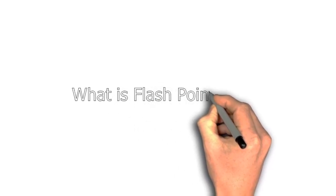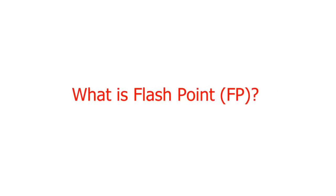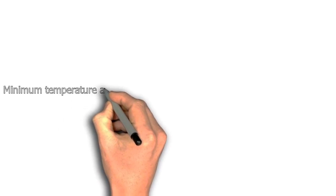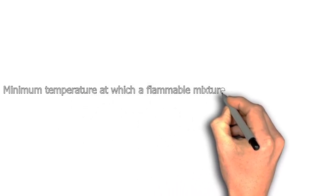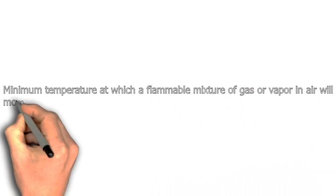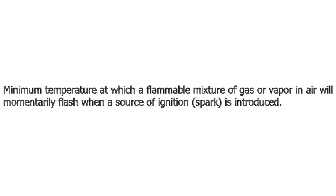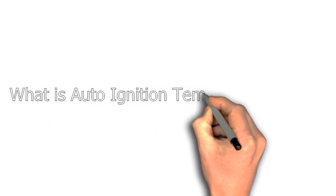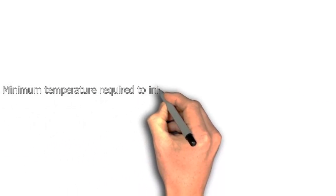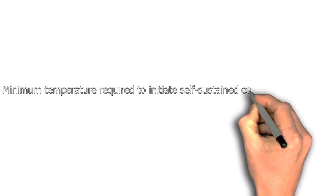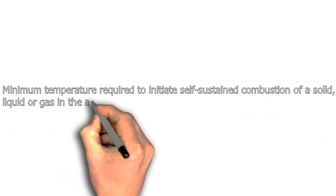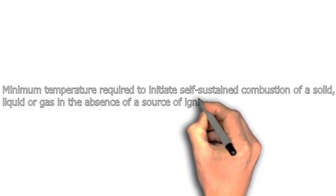What is flash point? The minimum temperature at which a flammable mixture of gas or vapor in air will momentarily flash when a source of ignition is introduced. What is auto-ignition temperature (AIT)? The minimum temperature required to initiate self-sustained combustion of a solid, liquid or gas in the absence of a source of ignition.